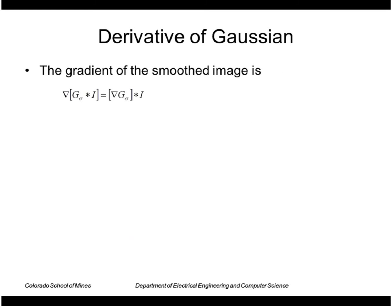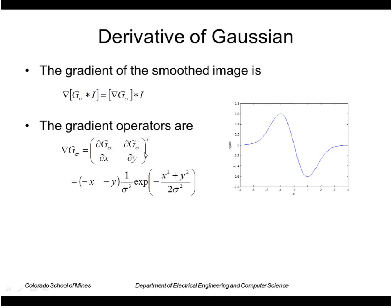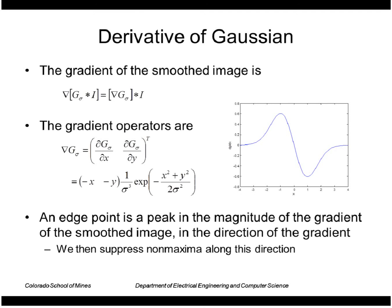In two dimensions, we take the gradient of a Gaussian and convolve it with an image. This gives one operator for x and one for y. We apply these two operators, find the magnitude and direction of the gradient, and suppress non-maxima along that direction. This turns out to be very good for step edges.